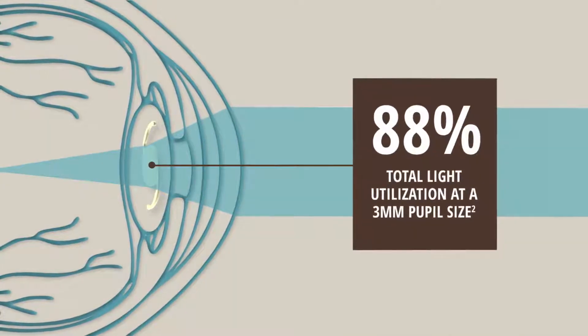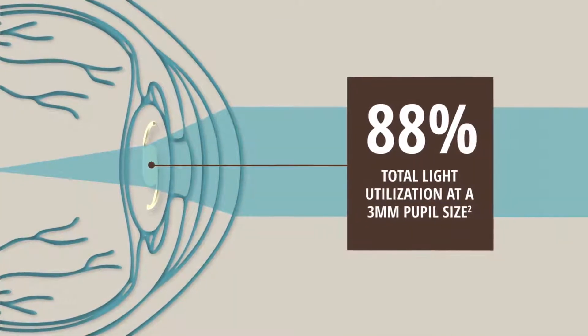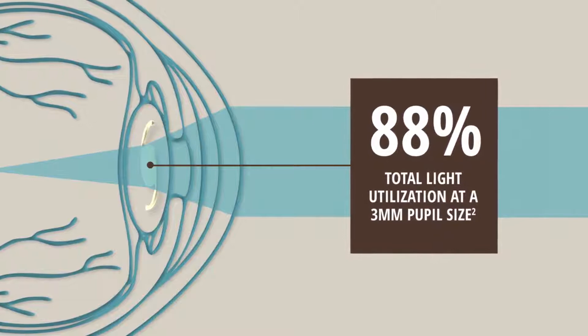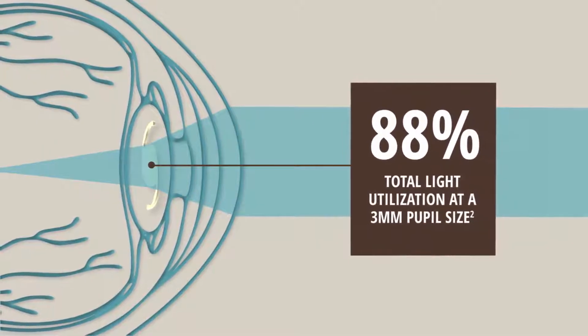The unique diffractive structure allows the lens to transmit 88% of light to the retina at a 3 millimeter pupil size for exceptionally high light utilization.